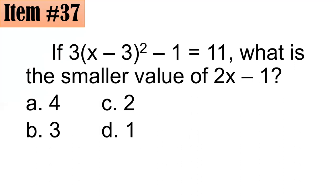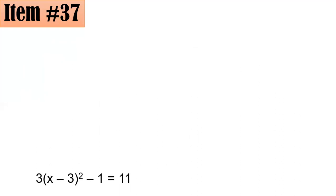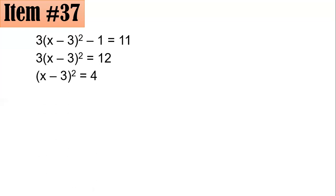Item 37. If 3 times the square of x minus 3, subtracted by 1, is equal to 11, what is the smaller value of 2x minus 1? Is it 4, 3, 2, or 1? Now, from here, we could actually see that adding both sides by 1 gives us 3 times x minus 3 squared equals 12. We wanted to isolate the expression with a square, so we will divide both sides by 3. Hence, you will have x minus 3 quantity squared equals 4.